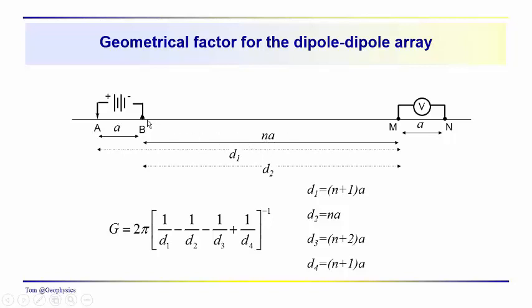We usually take the separation between the current electrodes and the potential electrodes as some multiple of the spacing between the current electrodes and the potential electrodes. So in this example, we define n times a as the distance from the rightmost current electrode to the leftmost potential electrode.